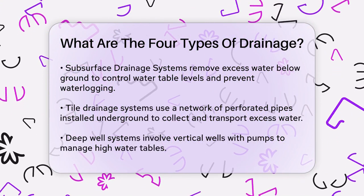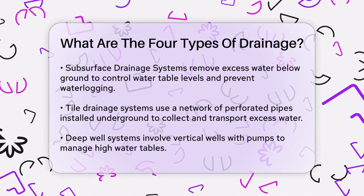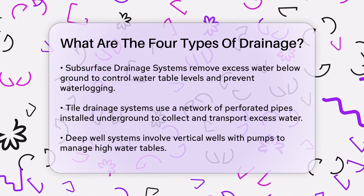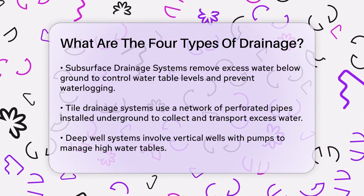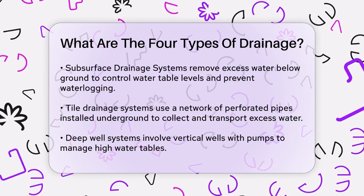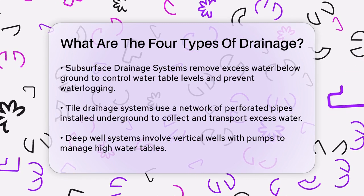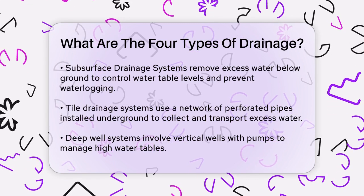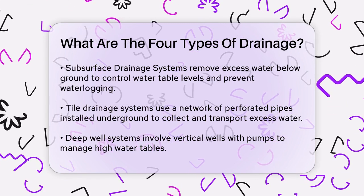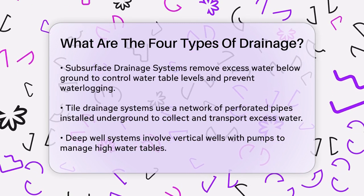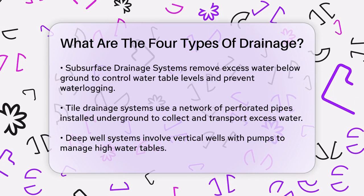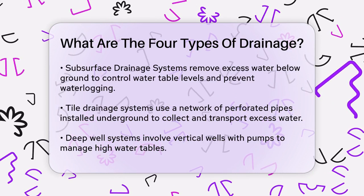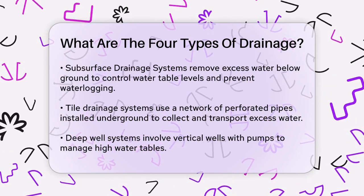Horizontal drainage systems consist of buried perforated pipes that intercept and collect subsoil water, while vertical drainage systems, or well point systems, use closely spaced vertical pipes to draw water from saturated soils.